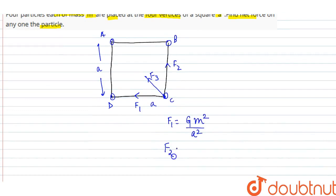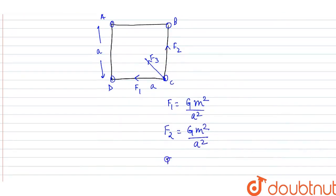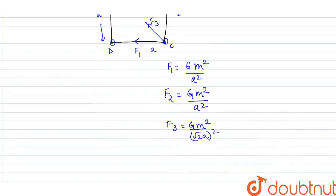Similarly, F2: G times mass of B (M) times mass of C (M), so Gm² divided by the distance between them. The distance between B and C is the diagonal, which is √2·A, so (√2A)² = 2A². Therefore F2 = Gm²/2A².